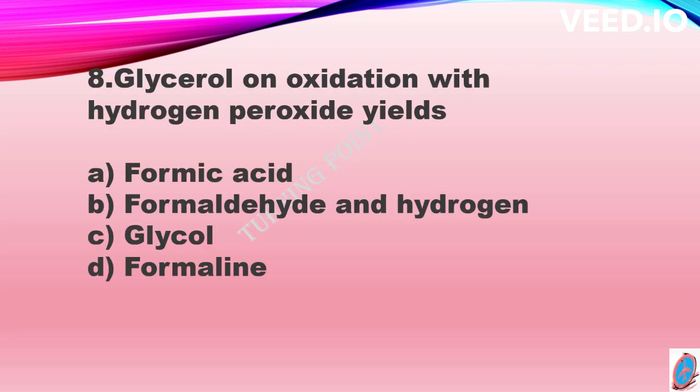Glycerol on oxidation with hydrogen peroxide gives option A formic acid, option B formaldehyde and hydrogen, option C glycol, and option D formalin. The correct answer is option A, formic acid.